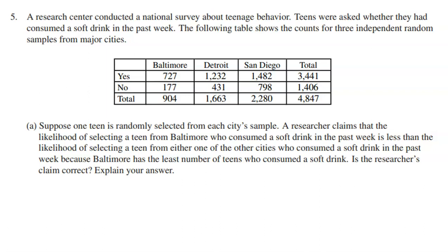We have a classic two-way table with three different cities — Baltimore, Detroit, and San Diego — and the counts for those who said yes, they consumed at least one soft drink in the past week, and those who said no. Suppose one teen is randomly selected from each city's sample. A researcher claims the likelihood of selecting a teen from Baltimore who consumed a soft drink is less than from either of the other cities, because Baltimore has the least number of teens who consumed a soft drink. Is the researcher's claim correct? Explain your answer.